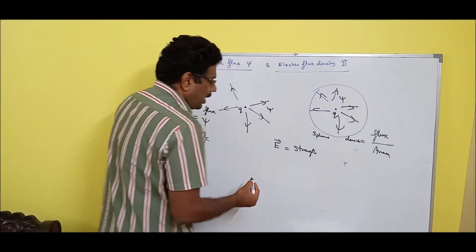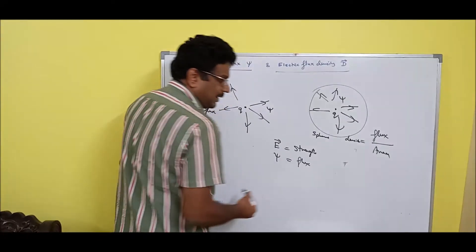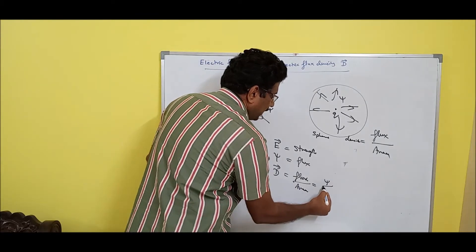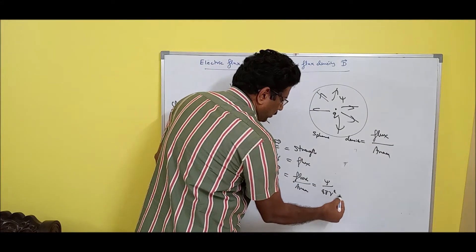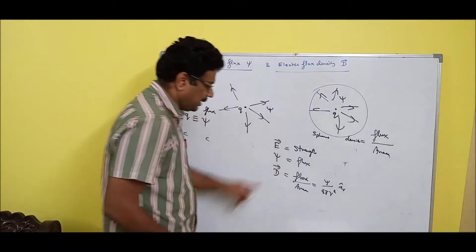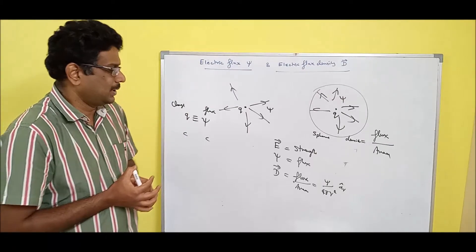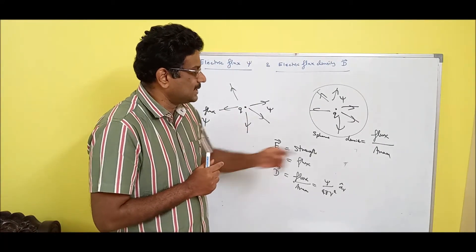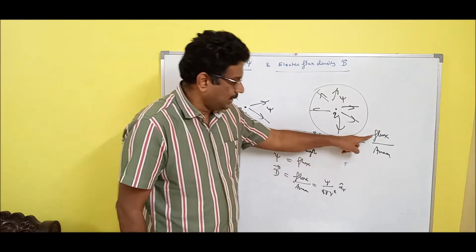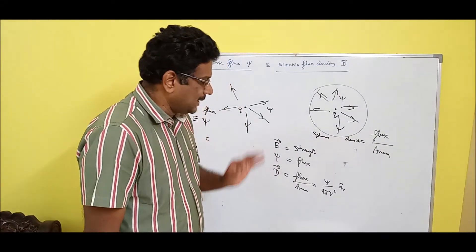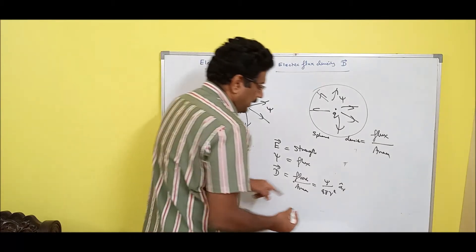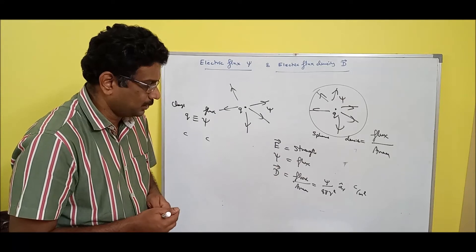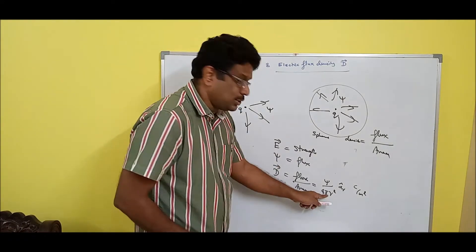What is flux? Flux is imaginary field lines. What is flux density? Flux density is flux per unit area. The area of a sphere is 4πr², and it goes in the radial direction, so it is in the ar cap unit. Electric flux density D is the measure of electric flux lines per unit area. It is a vector quantity. Its unit is coulomb per meter square. It is independent of the medium because epsilon-not is not connected.